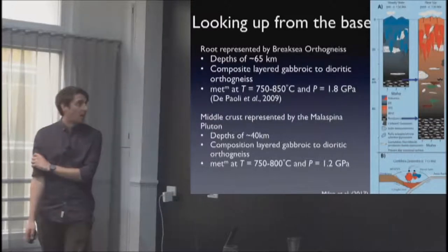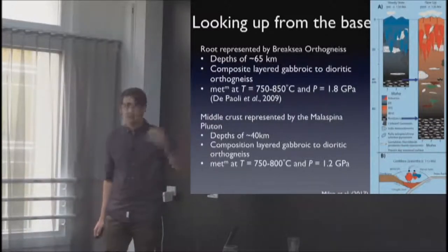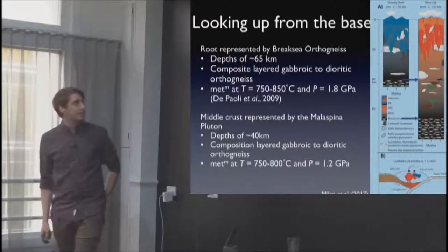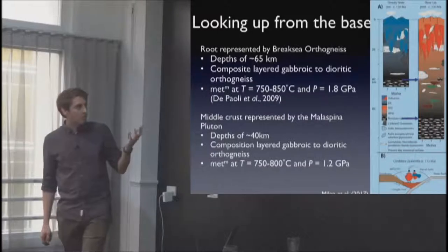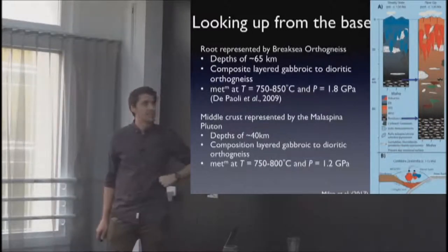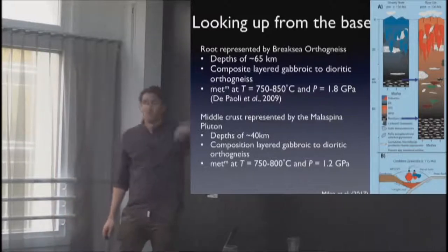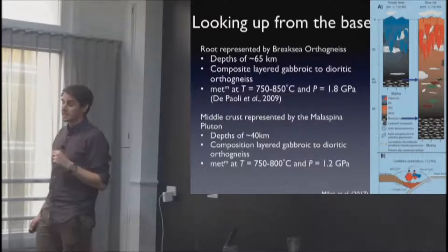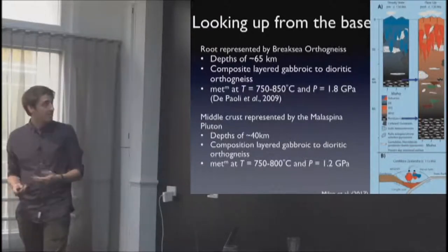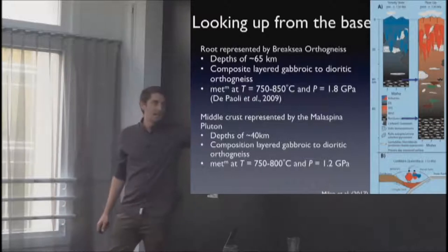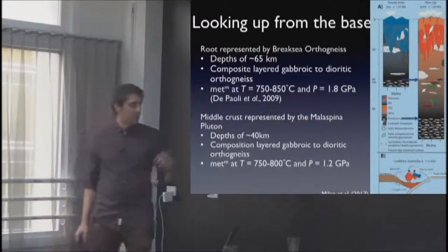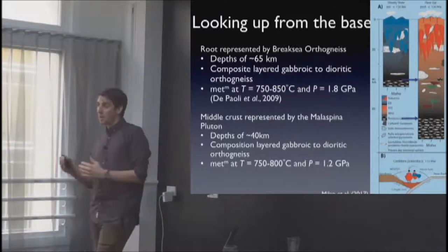The two main components that I will talk about are from different depths within this thickened system. The main one is the deepest exposed component that we see in Fjordland which is the Break Sea orthogneiss. It represents probably depths of about 65 kilometres that has come back to the surface. It's a composite-layered gabbroic and dioritic orthogneiss and it's been metamorphosed at high-pressure granulite facies conditions. The other one is the Malaspina. It represents about 40 kilometres in depth of formation, quite similar and it has been metamorphosed at lower conditions.